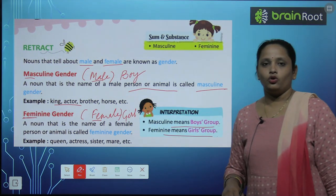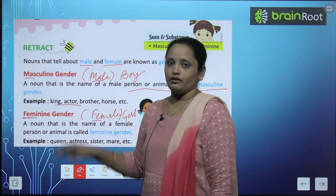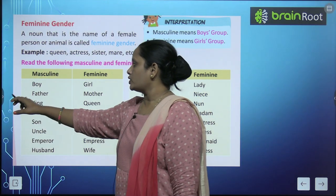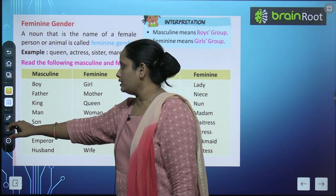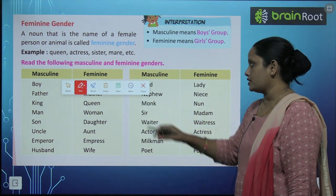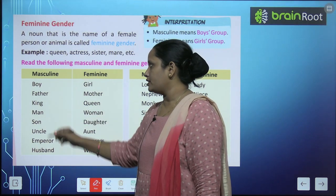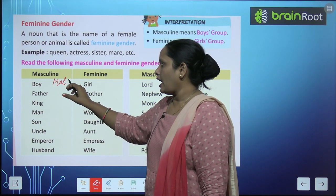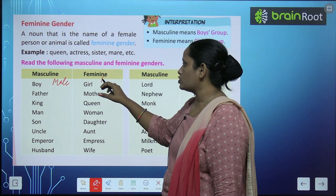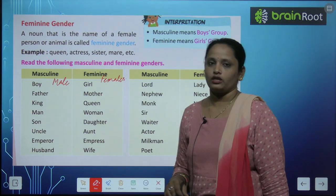So don't get confused with the given words. Now children, let's read the following masculine and feminine genders. In the left column is the masculine gender, which are males, and in the right column is the feminine gender, which are females. So let's read about them.